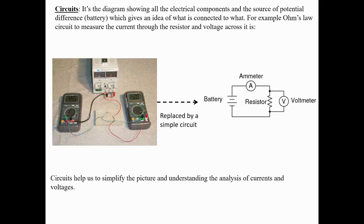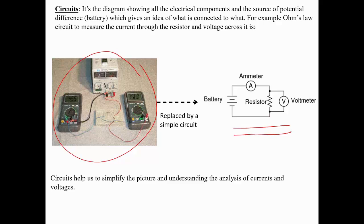Here's an example of a circuit used to measure current and voltage through any sample — it's called Ohm's slot. We use this circuit to measure current and voltage across a sample and study how current increases with voltage. This circuit can be replaced by a simplified, clean circuit diagram, which significantly improves understanding of the basic laws of circuits.